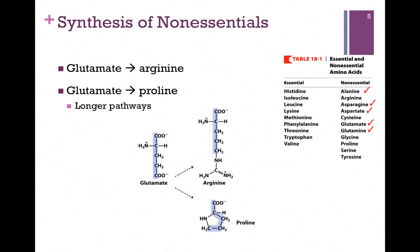We can start with the amino acid glutamate, and from that we can form arginine and proline. These are longer pathways and we won't be looking at those steps. You just need to know that the precursor for both arginine and proline is glutamate. You can see the 5-carbon backbone highlighted in blue — here it is in arginine built from that glutamate backbone, and here it is in proline, also highlighted in blue. Remember, proline is the amino acid where we form a cyclic structure with the alpha amine group. So let's check off arginine and proline on our list.